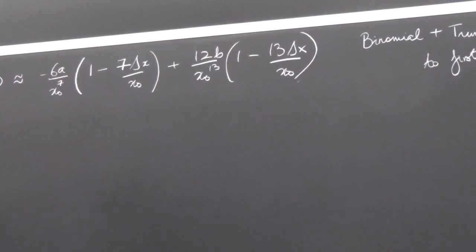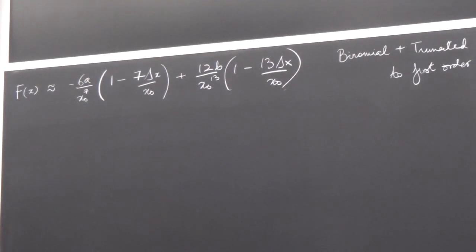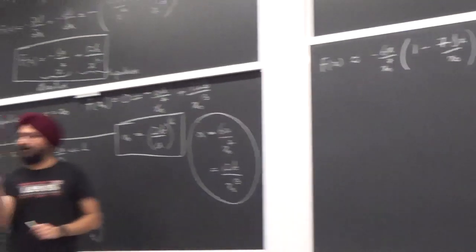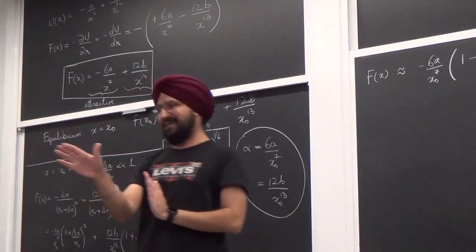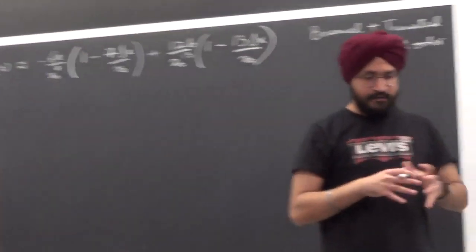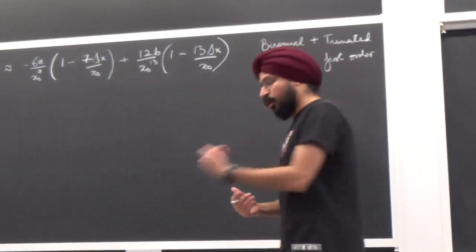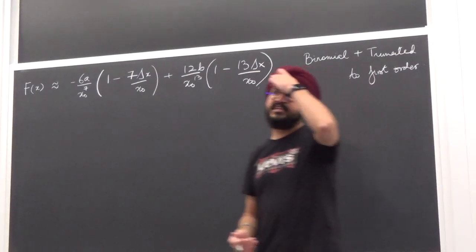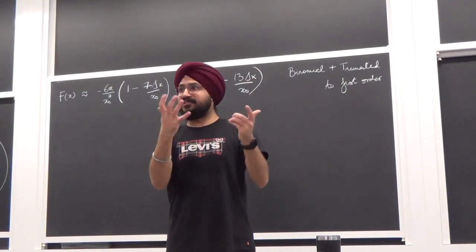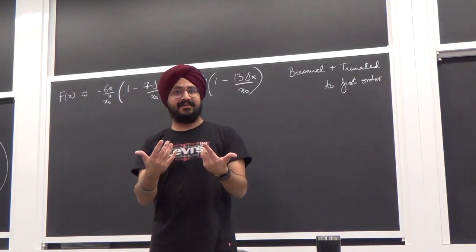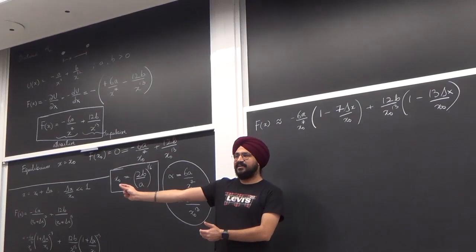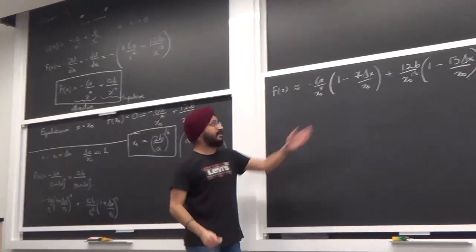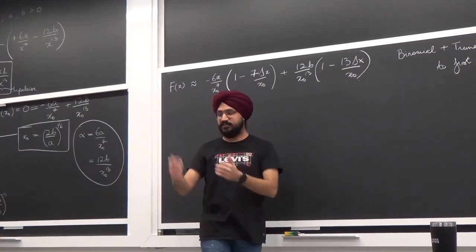A student asks: if δx/x₀ is much less than 1, why not just ignore it from the start? To zeroth order, you're so close to equilibrium that nothing happens. It's the first-order effect that tells you the physics. This is like perturbation theory — at different orders things look different. If you zoom out far enough, everything looks still; zoom in and the dynamics appear.